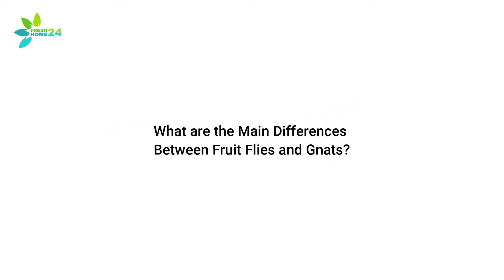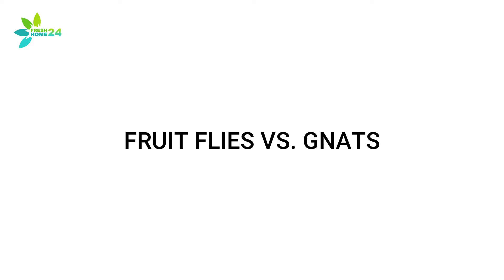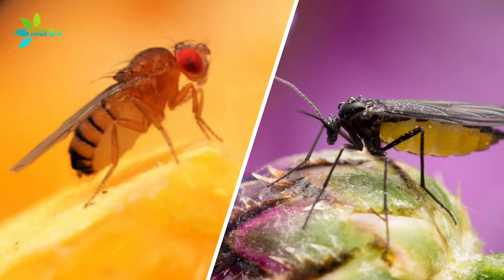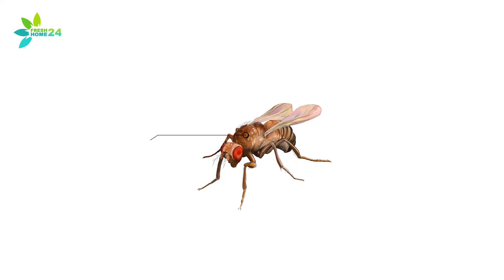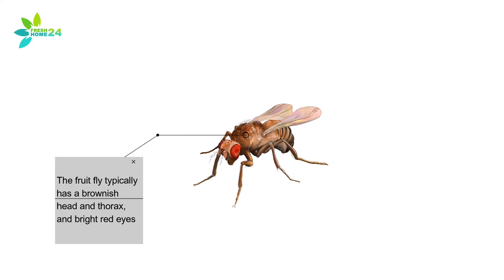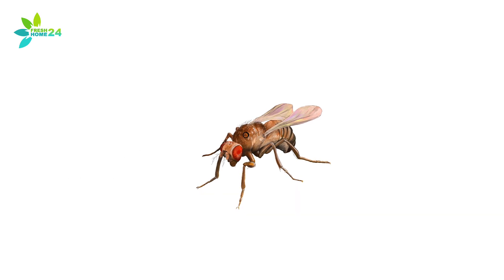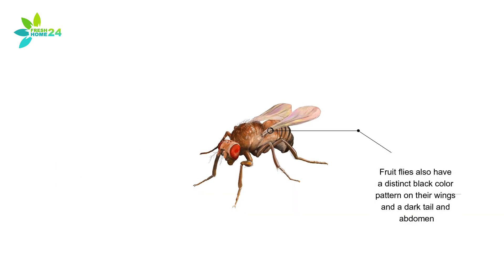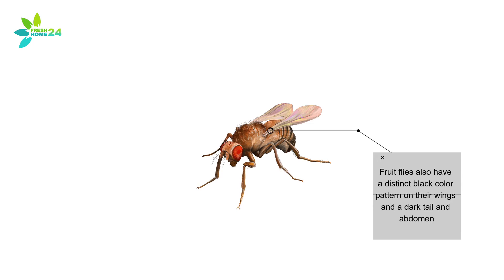When it comes to the fruit fly versus gnat question, some distinct differences can help you determine which pest you're dealing with. The fruit fly typically has a brownish head and thorax and bright red eyes, which sets them apart from fungus gnats. Fruit flies also have a distinct black color pattern on their wings and a dark tail and abdomen.